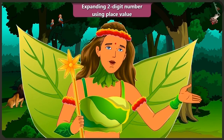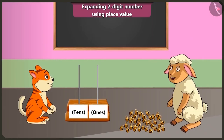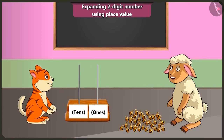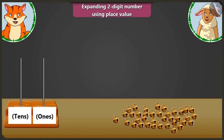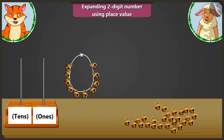Children, in this video, through some interesting examples, we will better understand expanding two-digit numbers using place value and writing in the boxes of tens and ones. Billy, here are some anklet beads. Can you count them and tell me how many beads to put in the tens and ones boxes of this abacus? Yes, sure. Look, Lily. First, I will make groups of ten with the anklet beads. One, two, three, four, five, six, seven, eight, nine and ten. I have made their group like this.